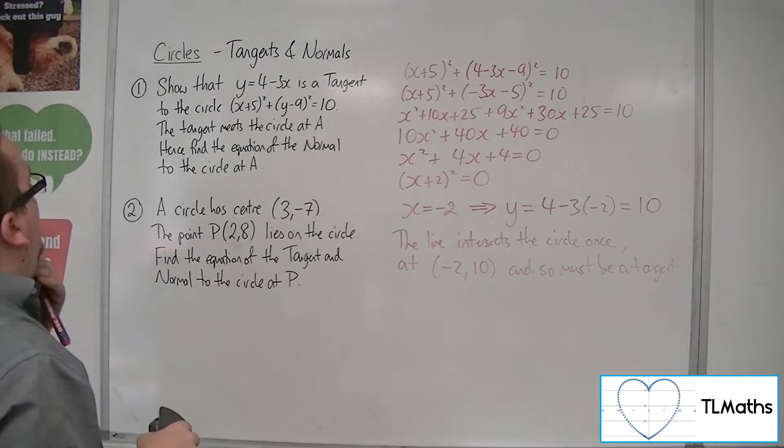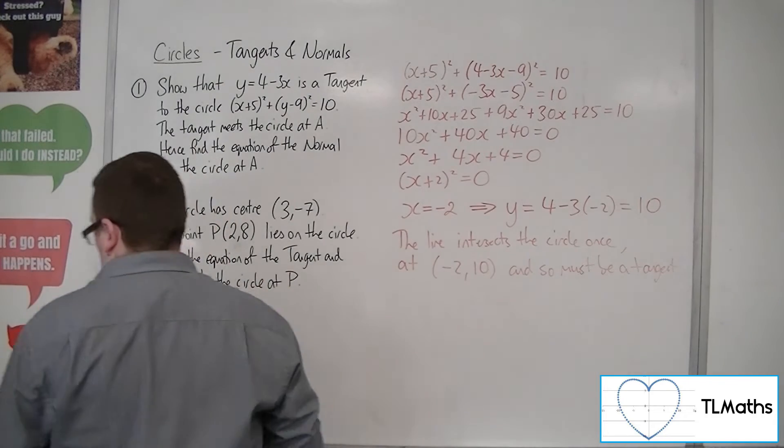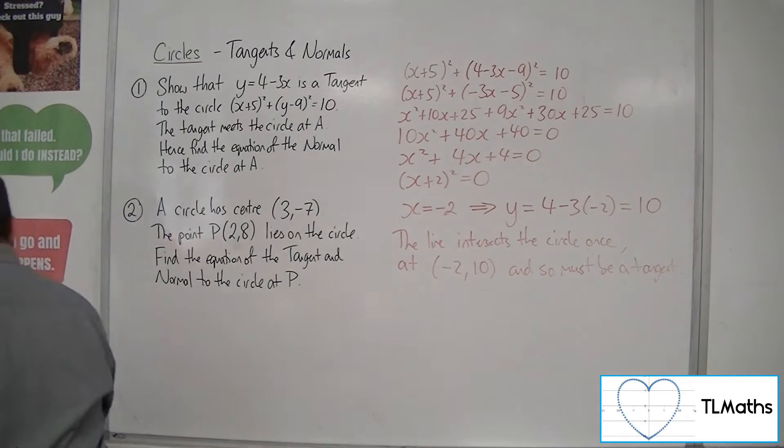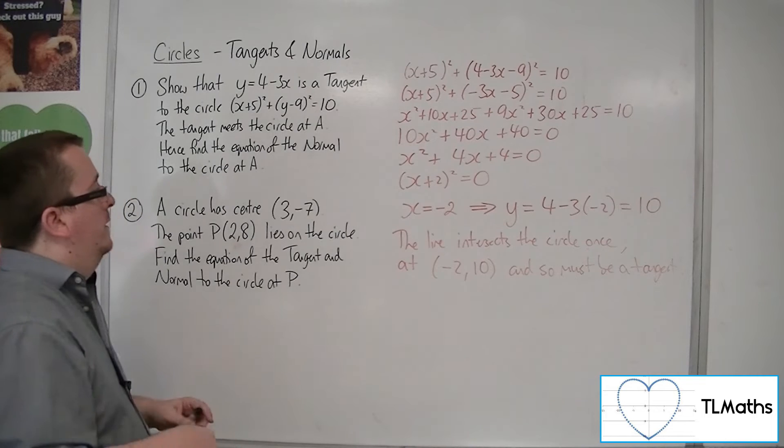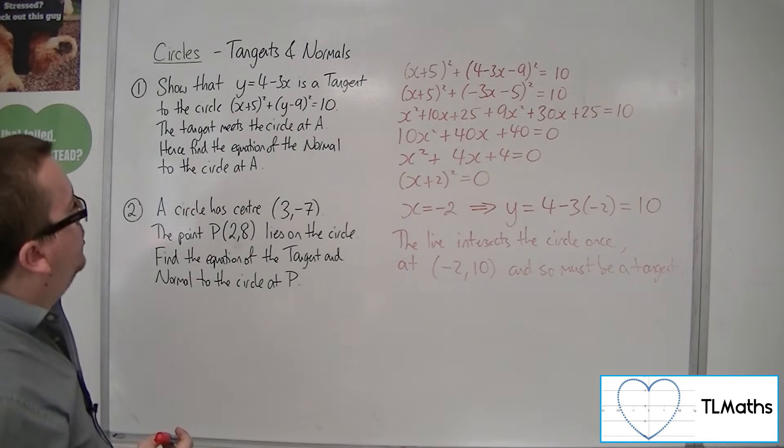The tangent meets the circle at A, hence find the equation of the normal to the circle at A. Okay, so we've done that bit. Let's just finish this bit off. Hence find the equation of the normal to the circle at A.